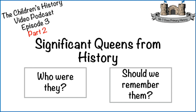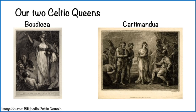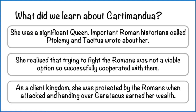Now, introducing our two Iron Age queens. Today we're going to be focusing on Boudicca — I'm pretty sure some of you will have heard of her. Last week we learned about Cartimandua. What were our findings? Number one, she was a significant queen at the time. Important Roman historians called Ptolemy and Tacitus wrote about her — remember the name Tacitus because you're going to hear more about him later. When the Romans came towards her kingdom, she realised that trying to fight them was not a viable option, so she successfully cooperated with them. As a client kingdom, she was protected by the Romans when attacked, and handing over Caratacus earned her wealth. Caratacus was one of the Iron Age tribal chiefs who fought against the Romans.